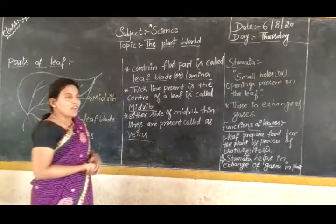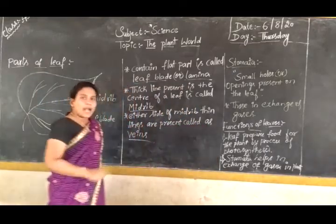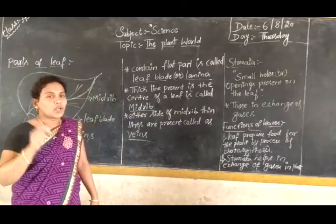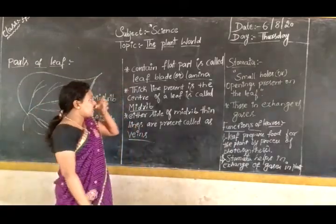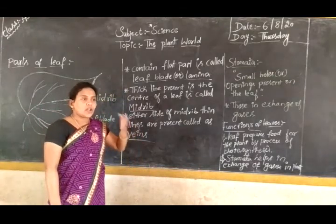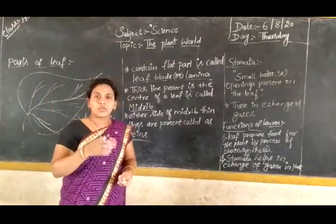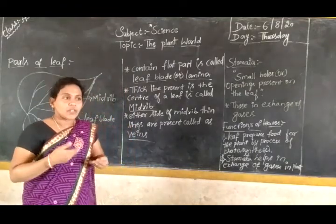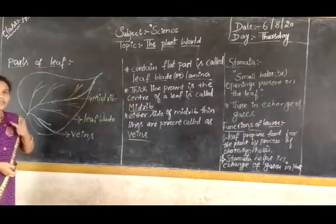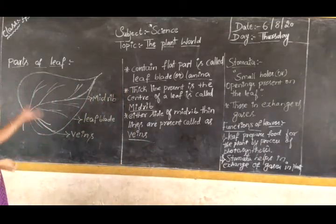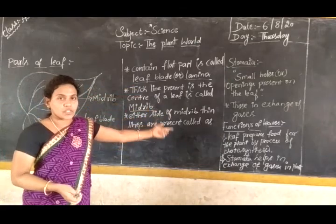This is the function of the leaf. Once again, I am repeating. The functions of leaves are: first, the leaf prepares food for the plant by the process of photosynthesis, so we also call it the food factory. Next, leaves help in the exchange of gases with the help of stomata. One more function is that the leaf helps store food, which we directly use as food — for example, cabbage and spinach. In today's class, we learned about different types of leaves, parts of the leaf, the meaning and function of stomata, and the functions of leaves.